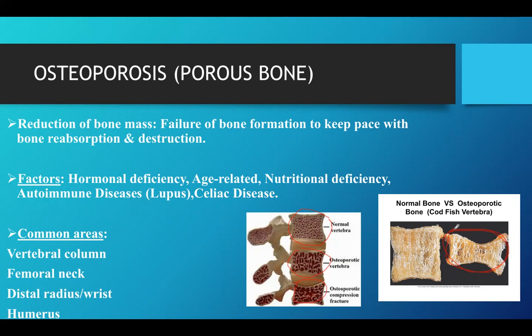The most common areas of affection for osteoporosis, in order, are the vertebral column, which is most common in older adults, followed by the femoral neck, distal radius and wrist, and humerus. When there is shortening of the vertebral height because of osteoporotic bone, it can lead to a fracture or shortening of the bone altogether.